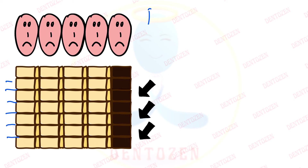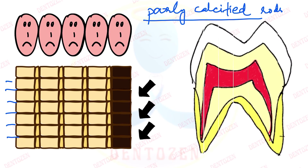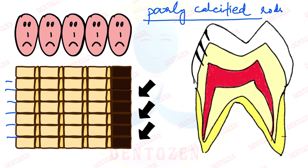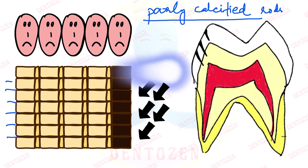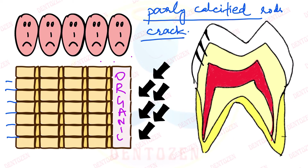So the first thing that can happen is poorly calcified rod segments form when rods cross planes of tension — these appear as black, leaf-like enamel lamellae. If there is severe disturbance, the entire structure can fail and a crack forms. This space gets filled with organic material from the surroundings.